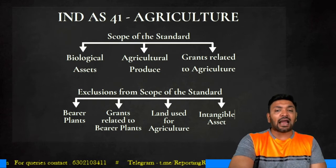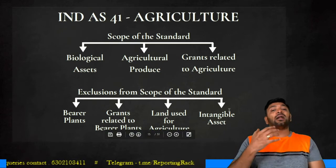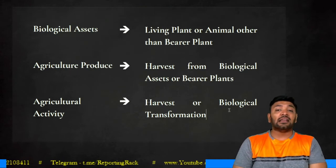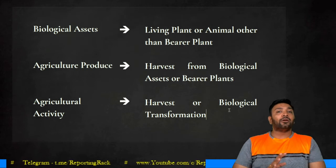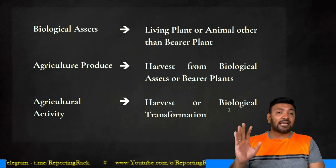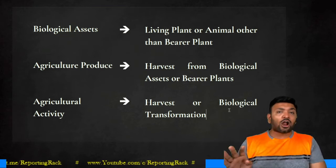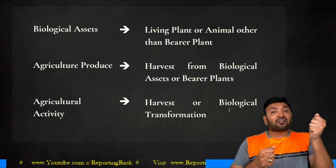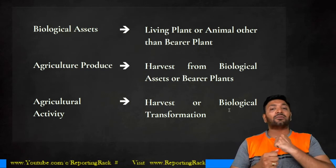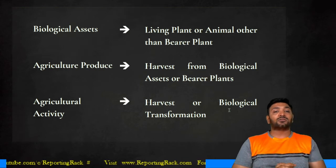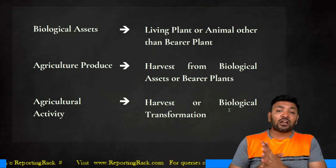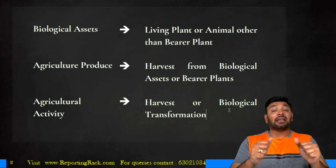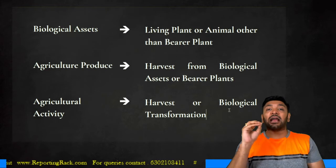A biological asset is nothing but a living plant or animal which is not a bearer plant — bearer plants are covered under Ind AS 16 and specifically excluded. So any other living plant or animal which cannot be categorized as a bearer plant gets covered under biological assets. Agricultural produce results from the harvest of biological assets and bearer plants. Agricultural activity relates to either the harvest or a biological transformation.